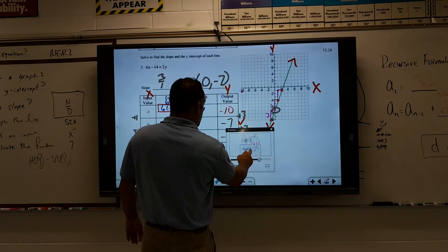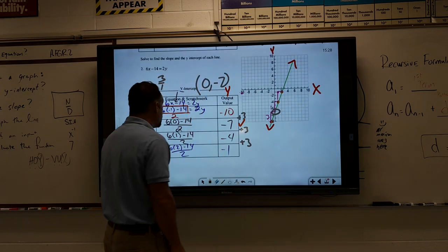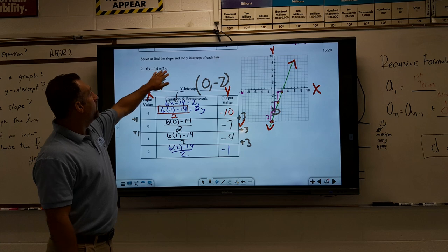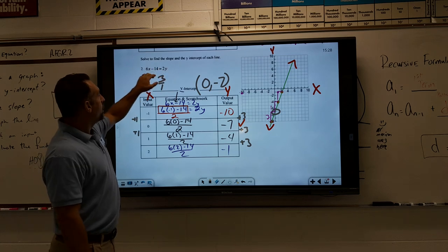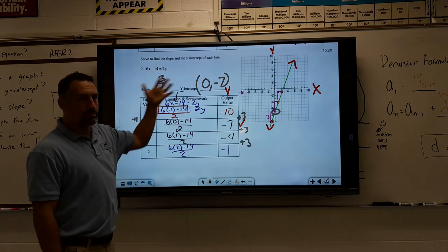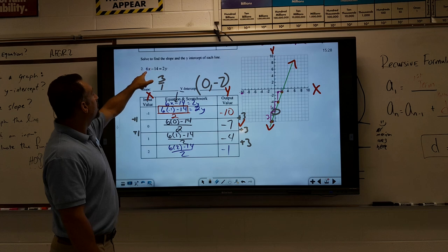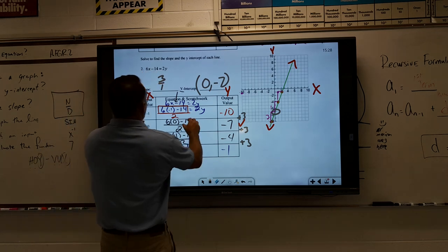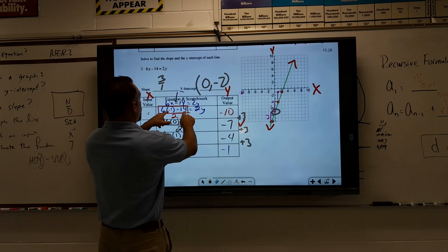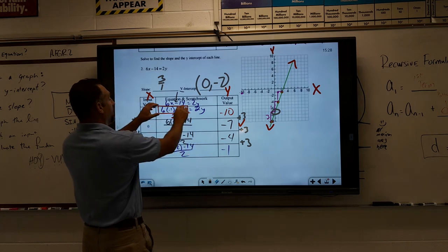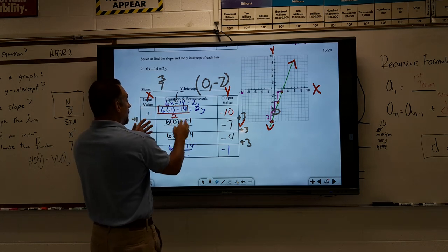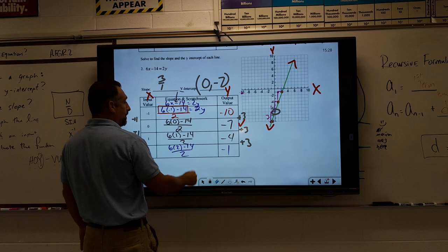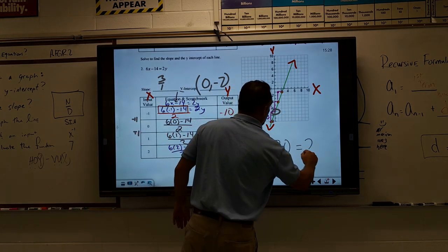We did another similar type question, this time in a messy format. It's not y equals something—we have 6x - 14 = 2y. What we did is find out what 6x - 14 was. We plug in -1 and get that number. Really what they had was -20 = 2y.